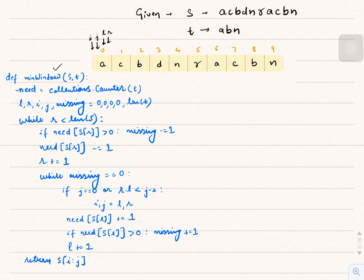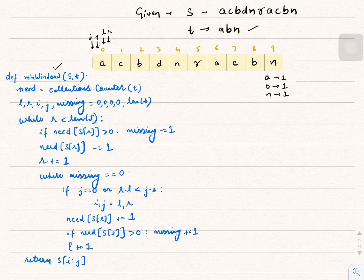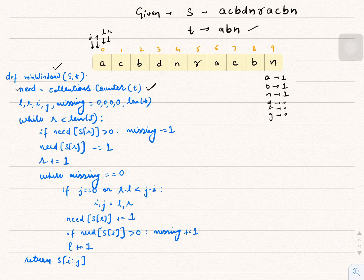Here's the code on the left side. `need` is a map which holds the character-to-count mapping for pattern T. For example, if our pattern is A, B, N, then `need` will be a dictionary where A maps to 1, B maps to 1, and N maps to 1. For all other ASCII characters, `need` will put 0. In Python, `collections.counter` gives us this mapping.